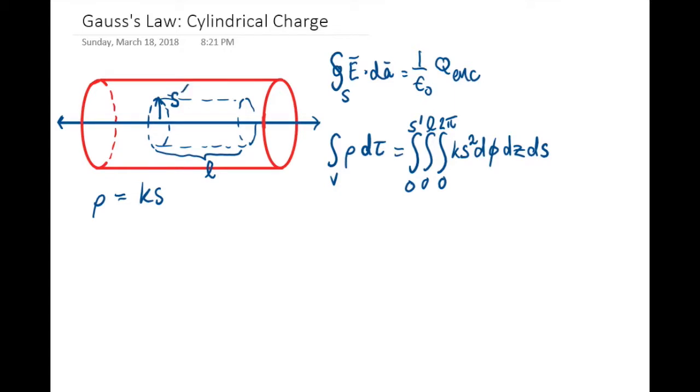We can pull out the 2π, the k, integrating from 0 to l gives us l, and then we'll be integrating s squared ds from 0 to s prime, which gives us two-thirds π k l s cubed. That's s prime cubed. So that's the charge inside the Gaussian cylinder.